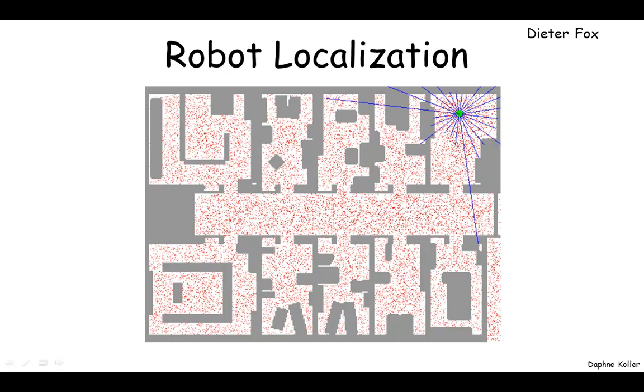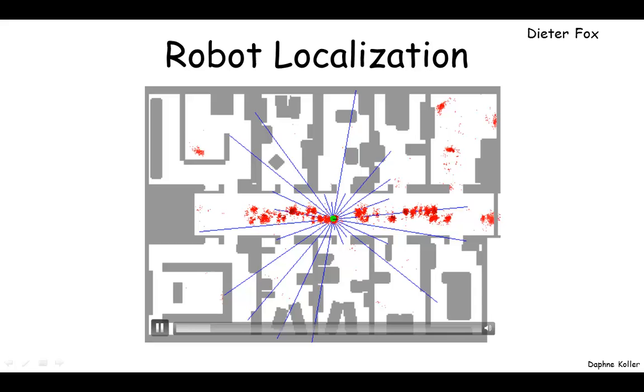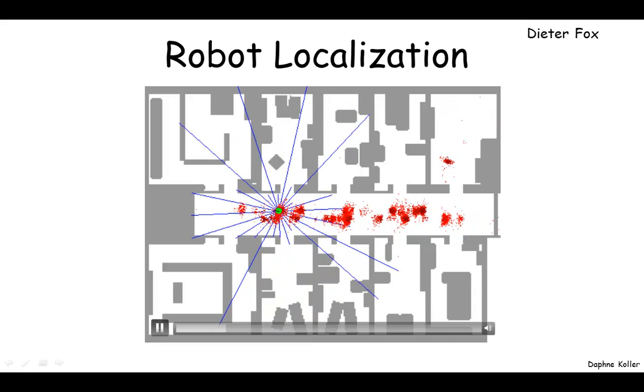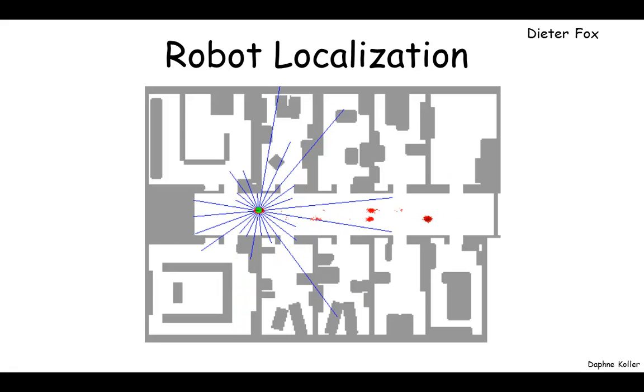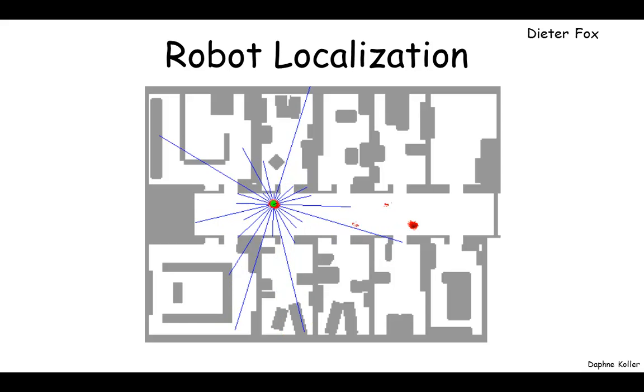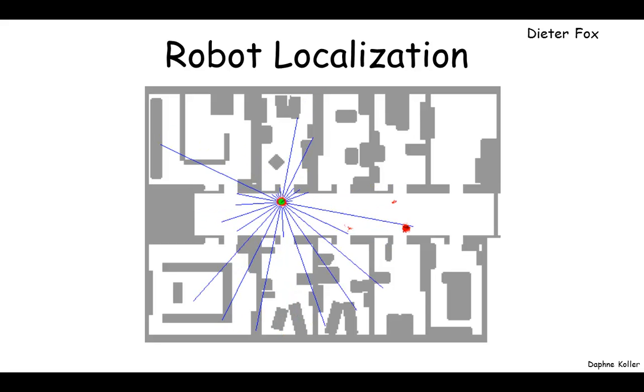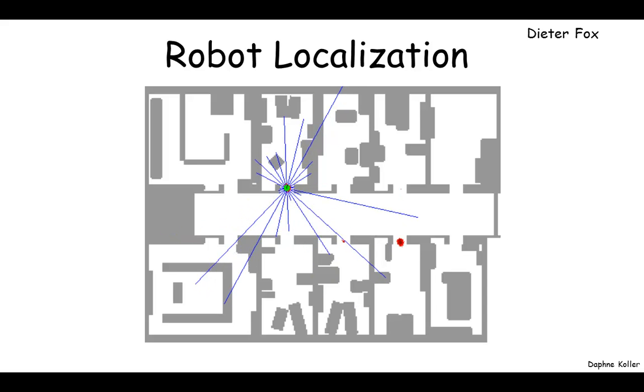So let's look at the robotics example. Here we have a robot that doesn't initially know where it is. The red dots indicate where it thinks it is. And based on sonar readings that it obtains over time, it's updating, refining its probability distribution over where it thinks it is. And as you can see, by accumulating very noisy evidence, eventually it actually figures out exactly where it is relative to the map that it has of the environment.